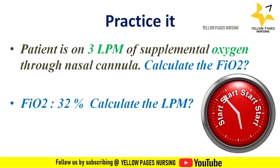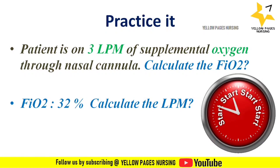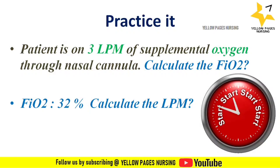Here is a practice exercise. First: a patient is on 3 liters per minute of supplemental oxygen through nasal cannula — calculate the FiO2. Second: FiO2 is 32% — calculate the oxygen flow rate in liters per minute. Your time starts now.